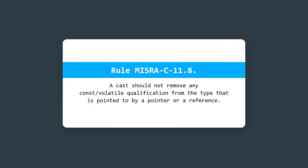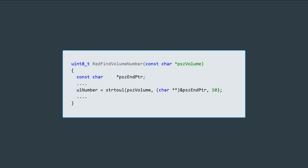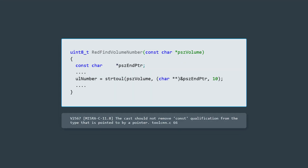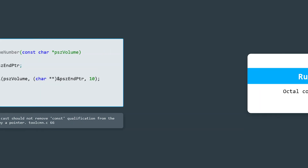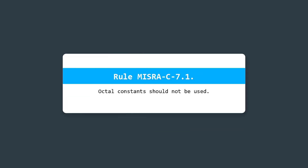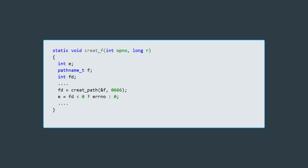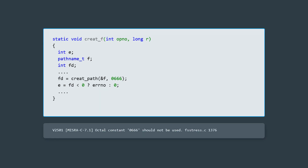Now let's see how the standard works on real code examples. Let's look at a few required rules since this category is the largest. A cast should not remove any const or volatile qualification from the type pointed to by a pointer or reference — this pattern leads to undefined behavior. Octal constants should not be used, as octal literals could hinder code readability, especially when a developer is skimming through code. Misinterpreting numeric values may result in various mistakes.